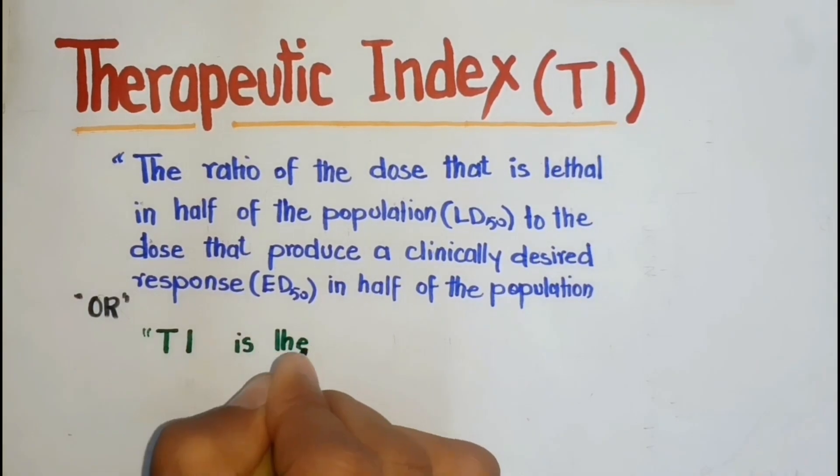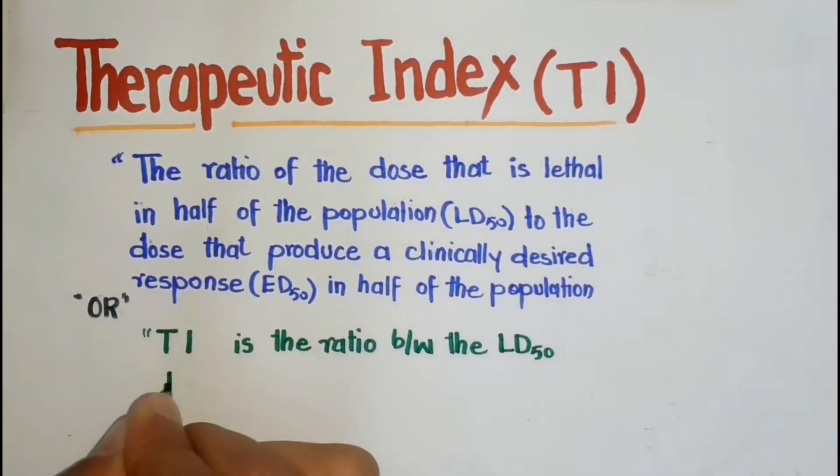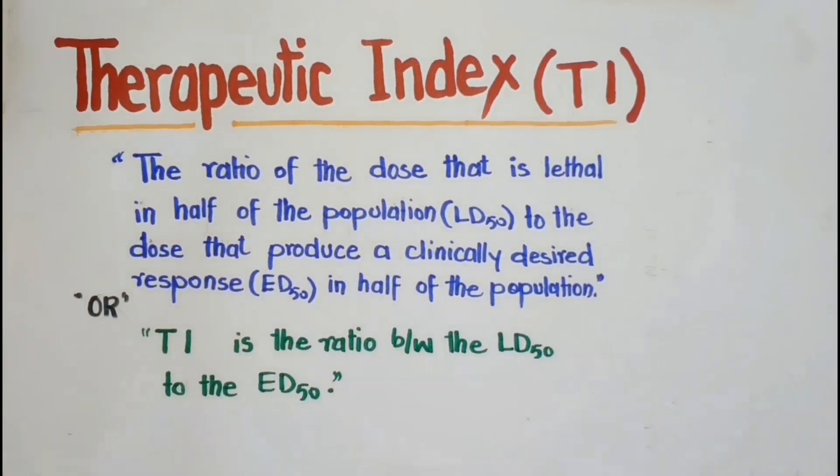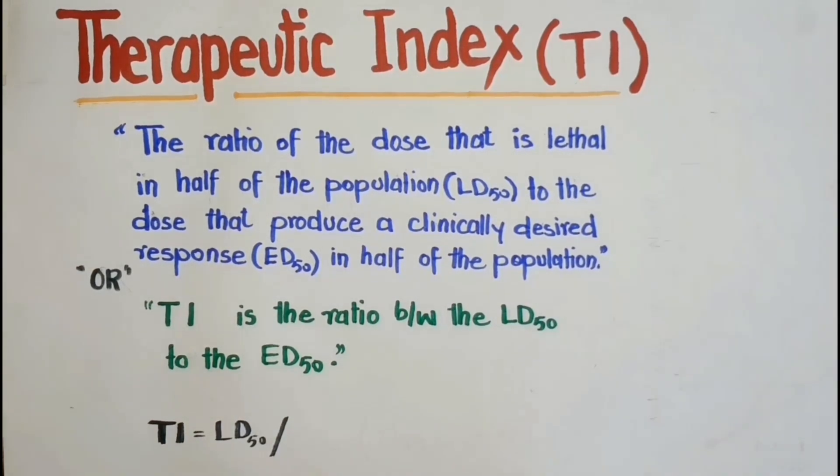Or, therapeutic index is the ratio between the LD50 to the ED50. Therapeutic index is determined by this mathematical formula where therapeutic index equals LD50 by ED50, and the mnemonic TILE can be used to memorize it easily.